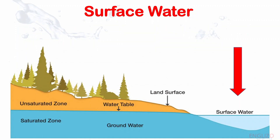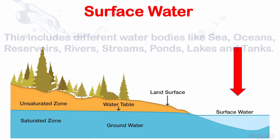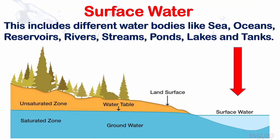Surface water: This includes different water bodies like seas, oceans, reservoirs, rivers, streams, ponds, lakes, and tanks.